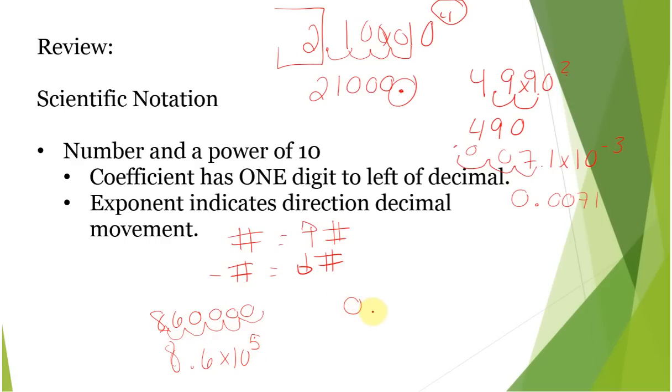On the other hand, 0.00006, we would go 5 spaces. So it would be 6 times 10 because it's a smaller than one number, negative 5.